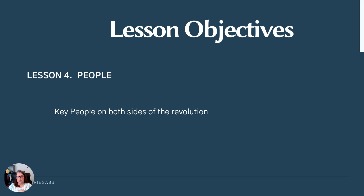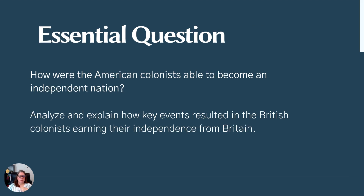We talk a lot about George Washington, the Continental Congress, King George III, Cornwallis, and Gates — the big names. But what about the thousands of everyday people who were part of that revolution? We can't ignore them. If we want to talk about how American colonists became an independent nation, we have to look at who those people were.